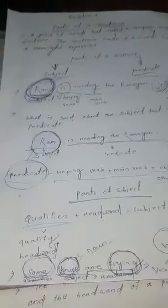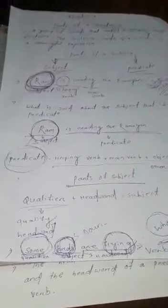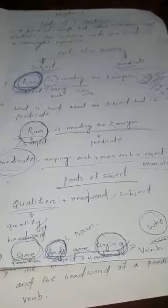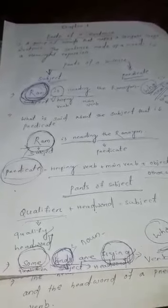For today's class, I have clarified what is the meaning of a sentence, what are the most important parts of a sentence, how you can find out the subject and the predicate, what the predicate consists of, and the parts of the subject. If you have any doubts or queries about this part of the chapter, please ask me. The next part of the chapter I will teach you in the next class. Goodbye, students.